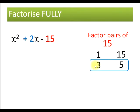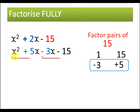So, I'm going to rewrite this 2x as minus 3x and a positive 5x. It doesn't matter which way round because in the next part, I'll do it the other way. So, look at the first two terms and the last two terms separately. Factorise fully. x is the highest common factor.